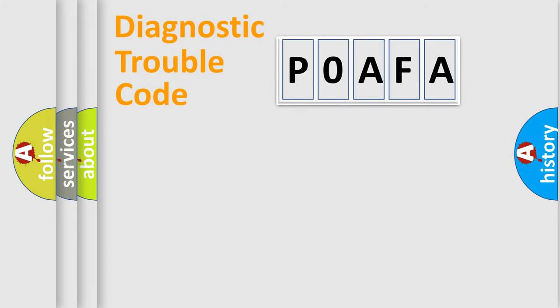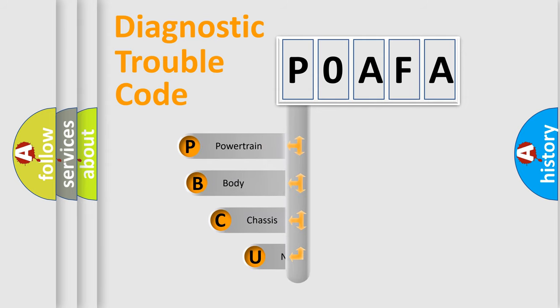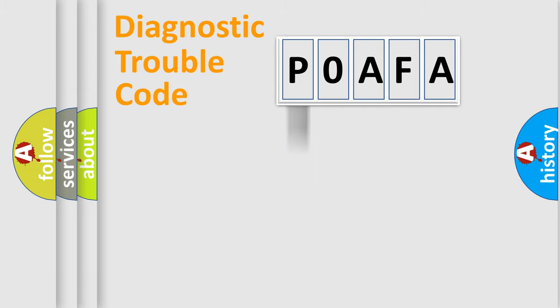First, let's look at the history of diagnostic fault code composition according to the OBD2 protocol, which is unified for all automakers since 2000. We divide the electric system of the automobile into four basic units: Powertrain, body, chassis, and network.